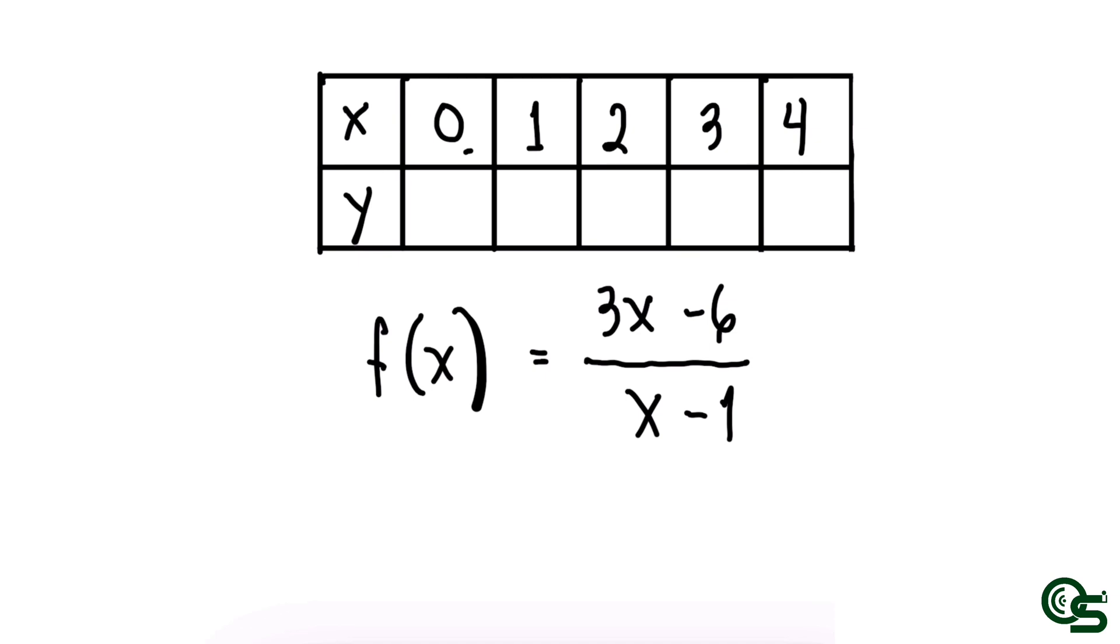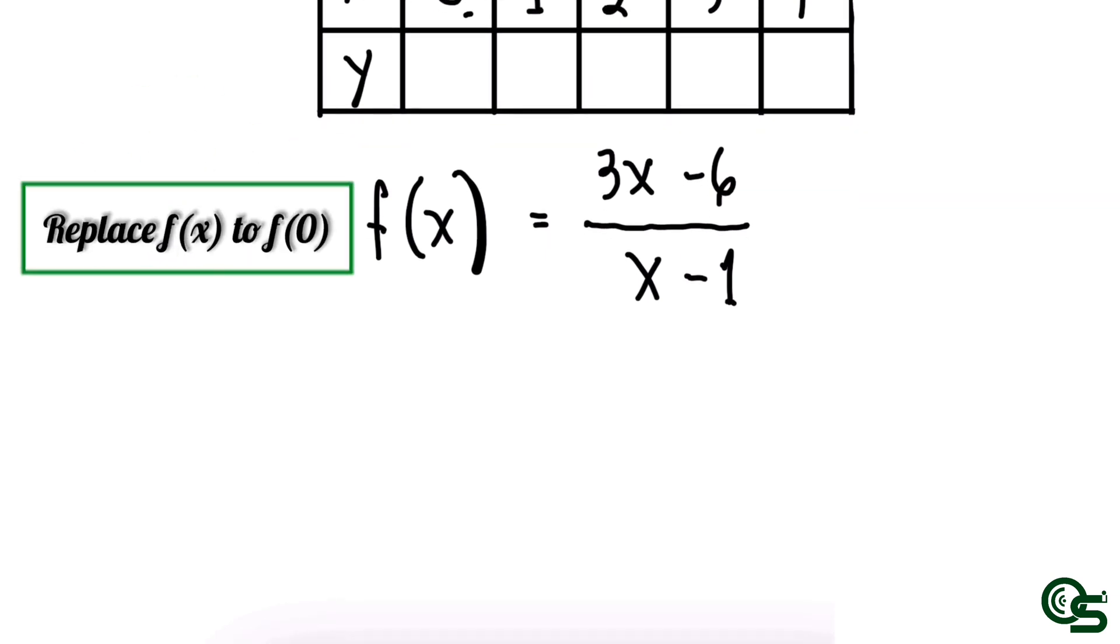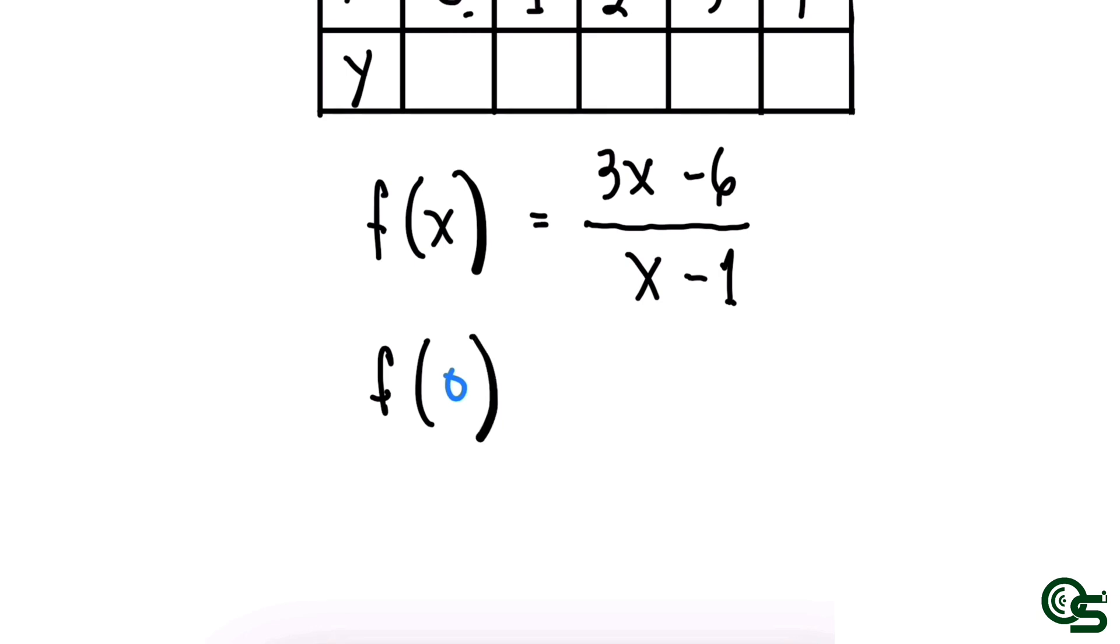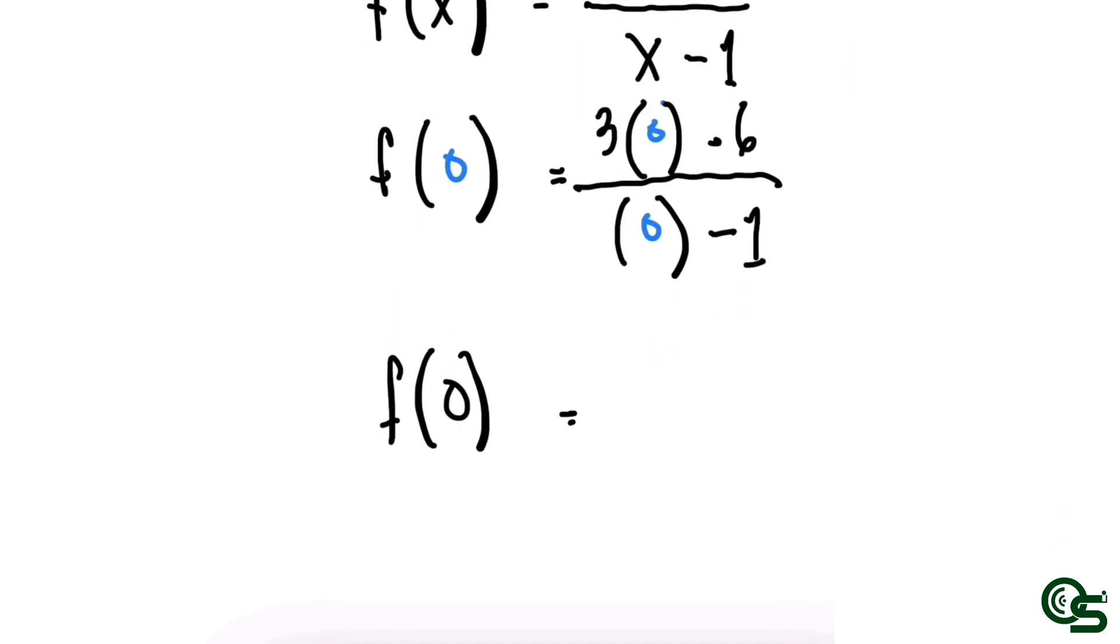The first step is we will replace x with 0 in the function (3x - 6)/(x - 1). So f(0) is equal to 3 times 0 minus 6 all over 0 minus 1.